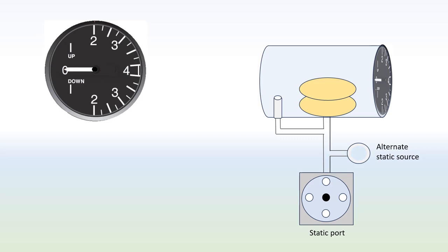The vertical speed indicator works solely from static port. It's got a metal case with a diaphragm inside. Air comes in from the static port but goes into the diaphragm and the case separately.